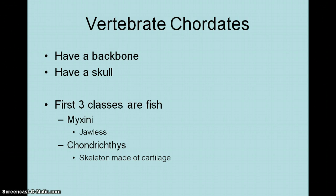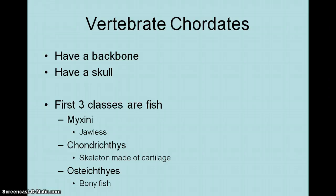Then you've got Chondrichthyes. Think of C for Chondrichthyes, C for cartilage — they have skeletons made up of cartilage. You have cartilage too, but you also have bones. The last fish class is Osteichthyes. Has anybody seen that 'osteo' prefix? Osteoporosis — which is a disease involving your bones. Well, these are bony fish.